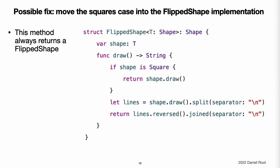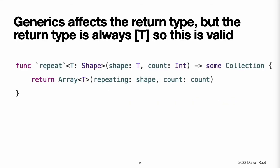One way to fix invalidFlip is to move the special case for squares into the implementation of FlippedShape, which lets this function always return a FlippedShape value. The requirement to always return a single type does not prevent you from using generics in an opaque return type. Here is an example of a function that incorporates its type parameter into the underlying type of the value it returns. In this case, the underlying type of the return value varies depending on T. Whatever shape is passed in, repeat creates and returns an array of that shape. Nevertheless, the return value always has the same underlying type of Array of T, so it follows the requirement that functions with opaque return types must return values of only a single type.